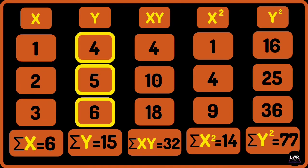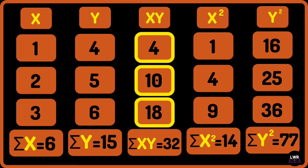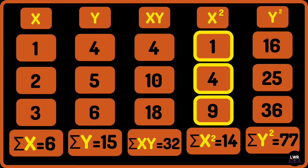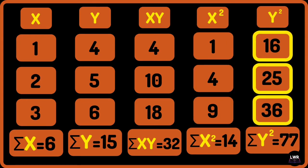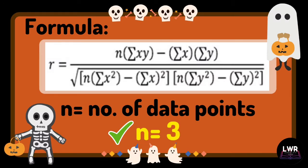The second column also has 3 data points, same with the third column. 3 data points are also present in the fourth column, same with the last column. Therefore, we can conclude that the number of data points, or n, in example number 1 is equal to 3.